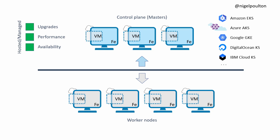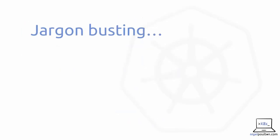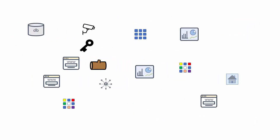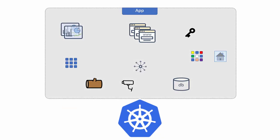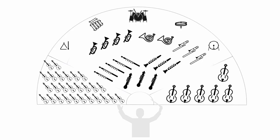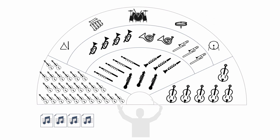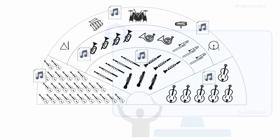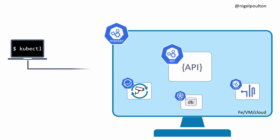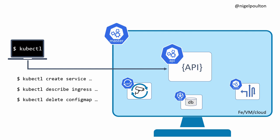We start at the very beginning and we describe things like what even is a cloud native microservices app and why are we so excited about them. Then we move on to Kubernetes itself and we cover things like what do we even mean when we say Kubernetes is an application orchestrator, and what are Kubernetes masters and nodes, and even what is hosted Kubernetes.